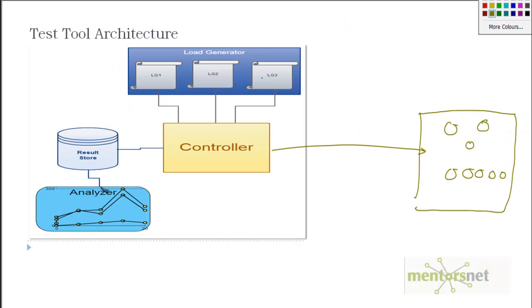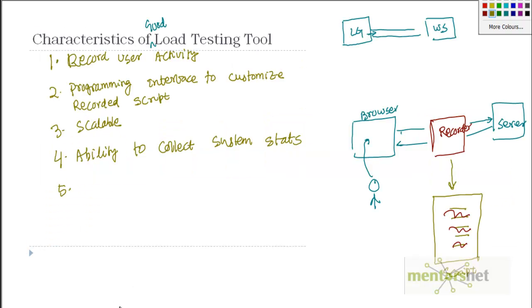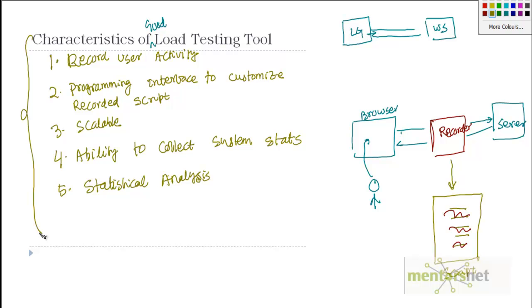Once we collect system statistics and put them in the result store, we need a really powerful tool that can analyze this data and give us a dataset that makes sense. This tool should do all sorts of statistical analysis on the data we have collected, so that as a tester we should be able to make the right kind of decisions — what to change, what to tune — instead of going through the raw data ourselves. These are the characteristics of a good load testing tool.